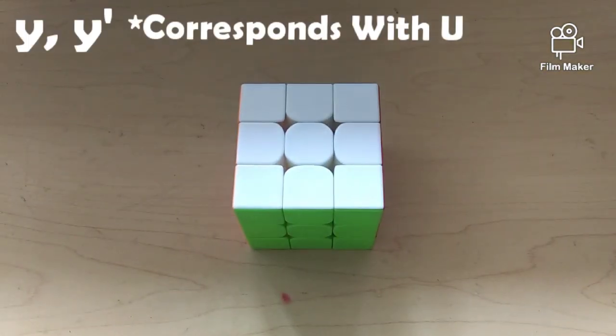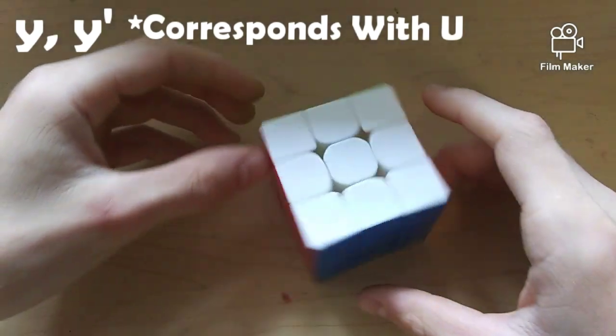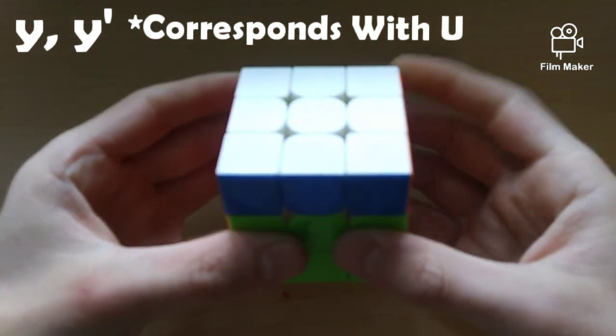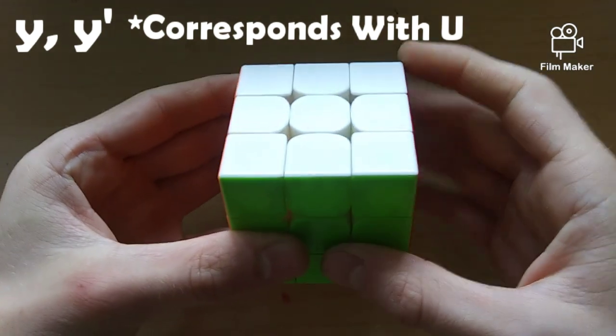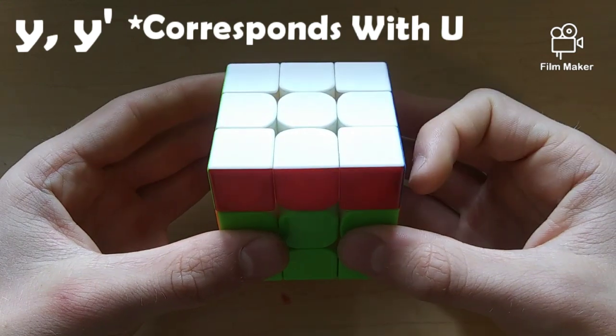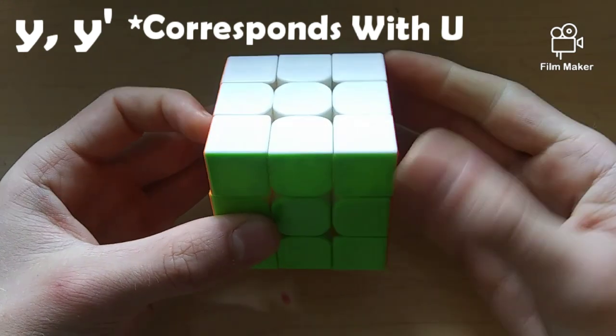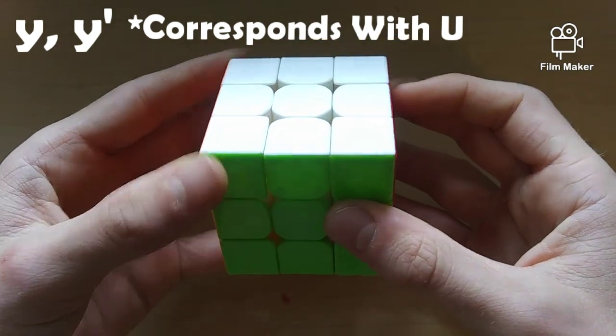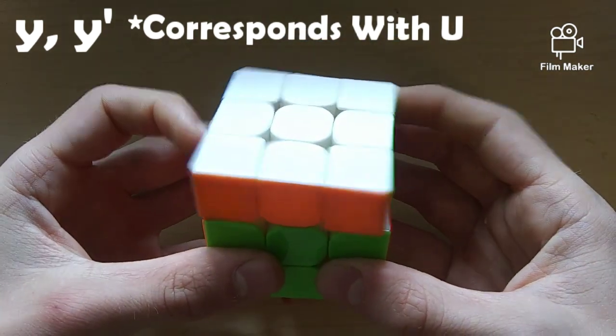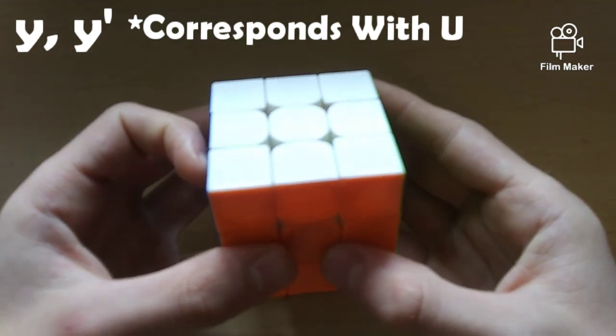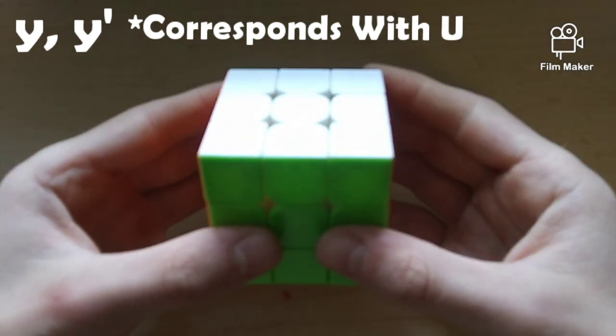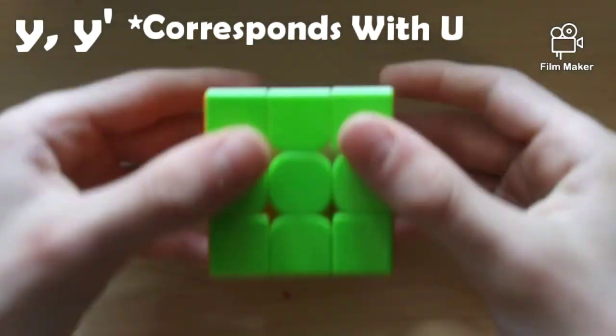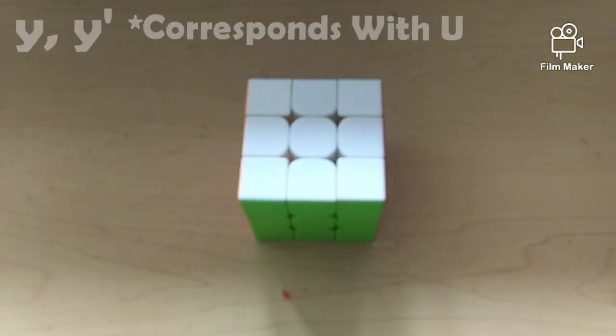Next up, we have the Y rotation, which moves on this axis right here. And, it is corresponding with the U face. So, if you wanted to do a Y, it's the same as doing U, except instead of moving only a single layer, you move the whole cube that direction. Similarly, if you wanted to do a Y', it would be the same as doing a U', except moving the whole cube in that direction. And, then, if you wanted to do a Y2, it's like U2, you just move it twice. And, again, it doesn't matter which direction.